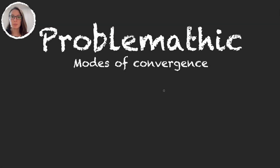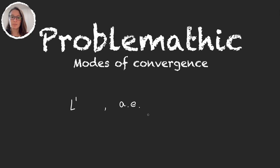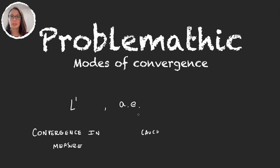In this video we're going to learn more about modes of convergence. In the last video we saw that bringing in a measure gave us two new ways of measuring convergence: L1 convergence and convergence pointwise almost everywhere. Now we're going to talk about two new ways: convergence in measure and being Cauchy in measure.